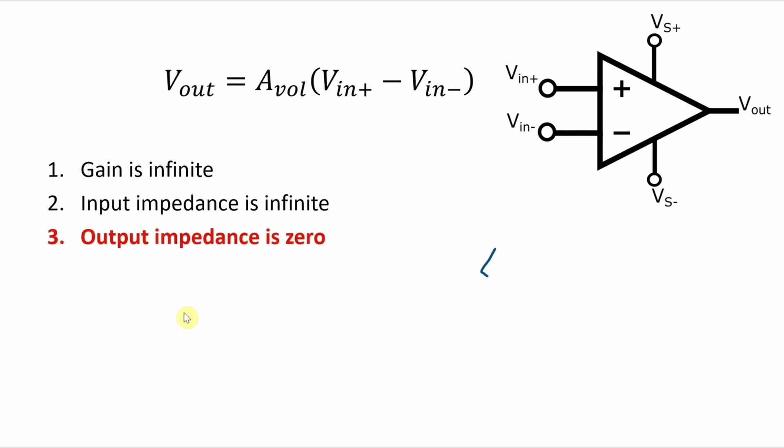So internally, you can think of the drive for Vout being some kind of dependent voltage source that's driving the load. Now, if there was an output impedance inside the circuit, there would be a variable drop across that impedance depending on how much current the load is drawing. And with zero output impedance, we don't have to be concerned with that.